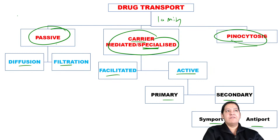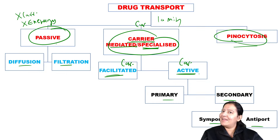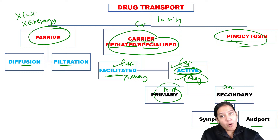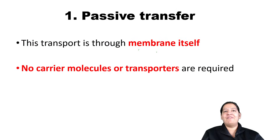In passive transport, no carrier is required and no energy is required. It is through the membrane itself. The cell membrane is made of lipid. Drugs that are lipid-soluble can dissolve in the membrane and cross to the other side — this is called diffusion. It is a type of passive transport. The drug does not require a carrier or energy; it simply dissolves through the lipid bilayer. Direction can be inside to outside or outside to inside.